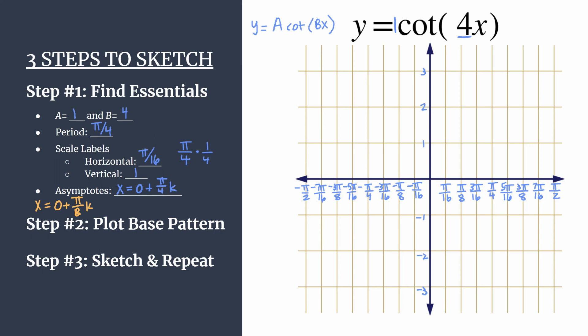The base pattern for cotangent graphs that are unshifted will be asymptote, point - I call this the upper curve shaping point - zero, a.k.a. the x-intercept, and then the lower curve shaping point. Remember, cotangent graph in general kind of looks like that.